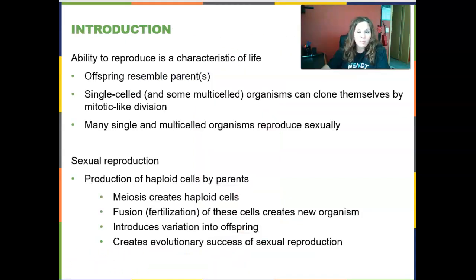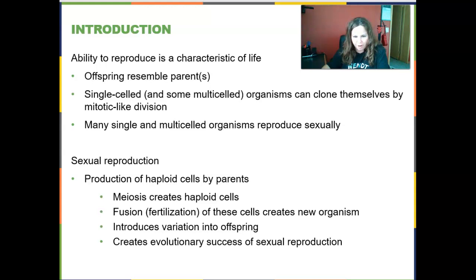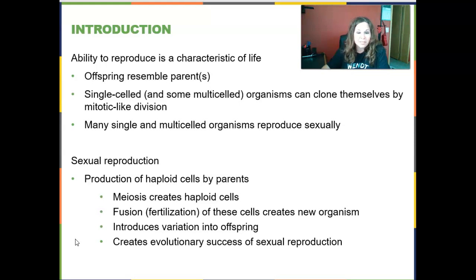If you'll remember from previous chapters, the ability to reproduce is one of those characteristics that all life forms share. In some cases, the offspring that are created resemble the parents. Sometimes they're actual clones of the parent, such as in single-celled organisms like bacteria or single-celled protists, when they clone themselves by a mitotic-like division.